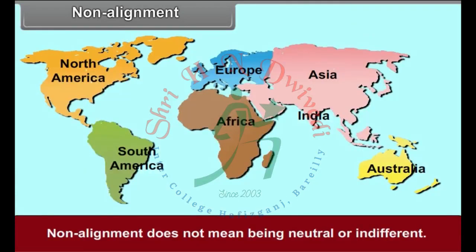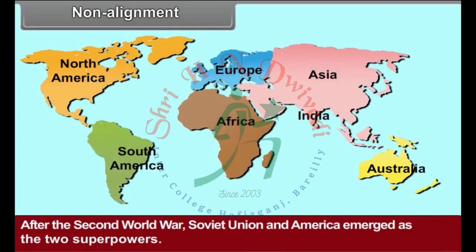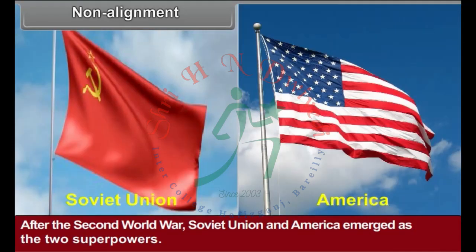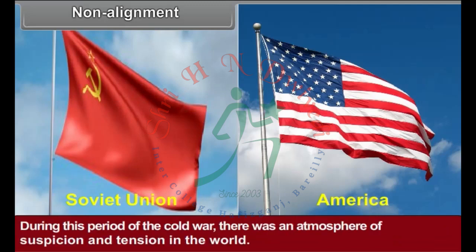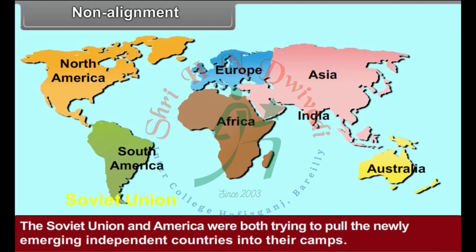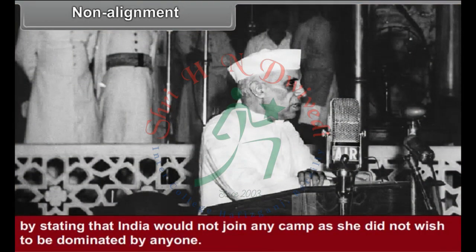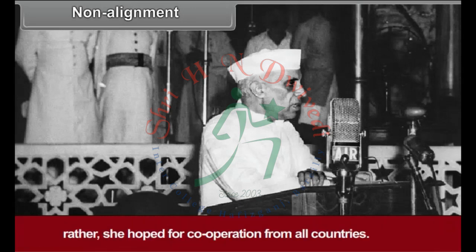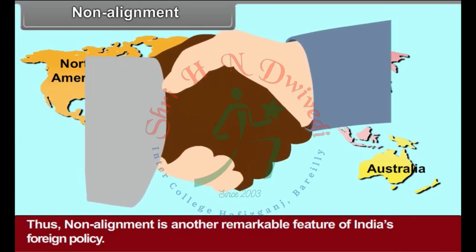Non-alignment: Non-alignment does not mean being neutral or indifferent. India's foreign policy is not non-aligned in this negative sense. After the Second World War, the Soviet Union and the United States of America emerged as the two superpowers. The tense relations between them are referred to as the Cold War. During this period, there was an atmosphere of suspicion and tension in the world, and both superpowers were trying to pull newly independent countries into their camps. Pandit Nehru clearly stated that India would not join any camp, as she did not wish to be dominated by anyone, but hoped for cooperation from all countries. This stand is known as the policy of non-alignment, and it is another remarkable feature of India's foreign policy.